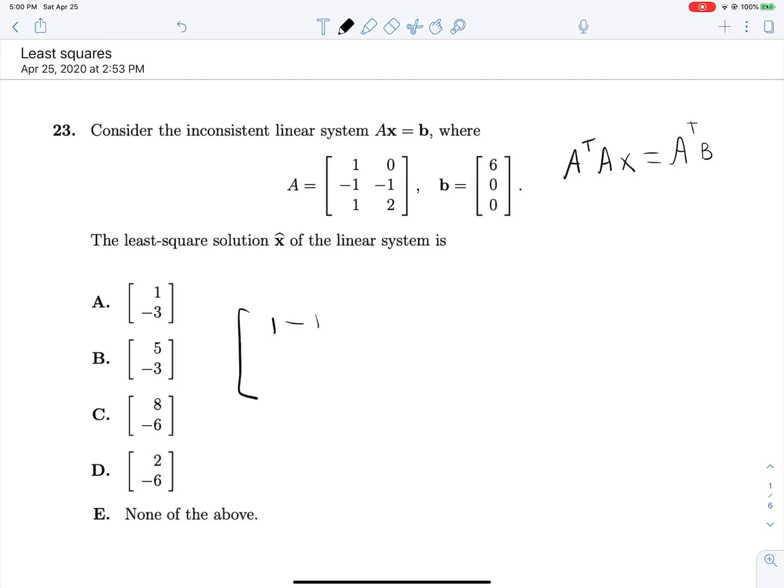So A transpose A will be [1, -1, 1] [0, -1, 2] multiplied by [1, 0] [-1, -1] [1, 2]. This gives us a 2 by 2 matrix with entries 3, 3, 3, and 5. A little shortcut you can do whenever you're computing a matrix times its transpose: it'll always be symmetrical if you're doing it right. So as soon as I find this entry, I know that the entry across the main diagonal will have to be the same.